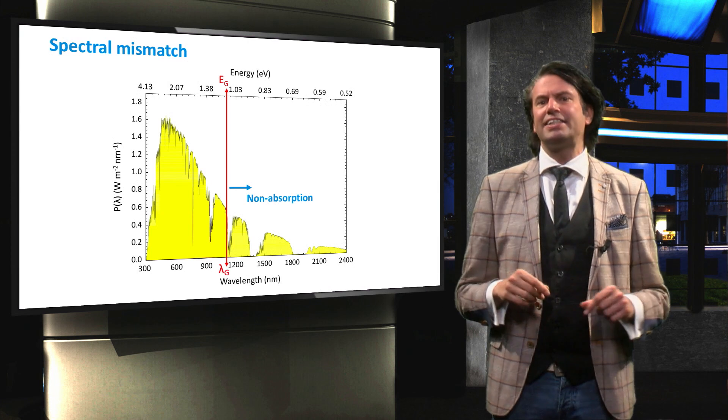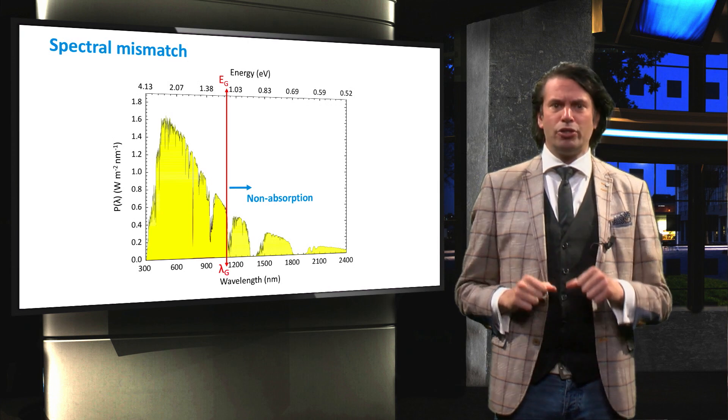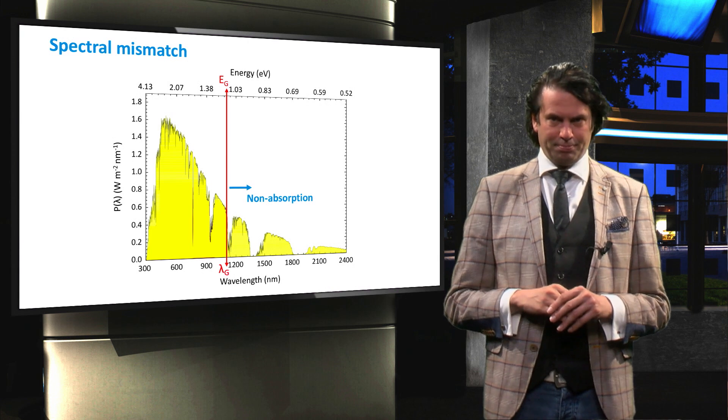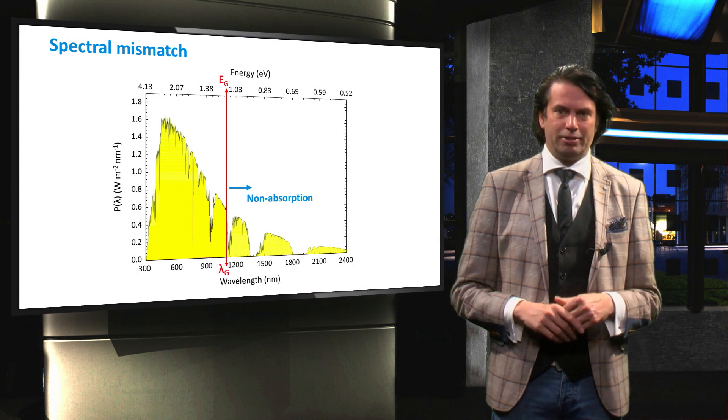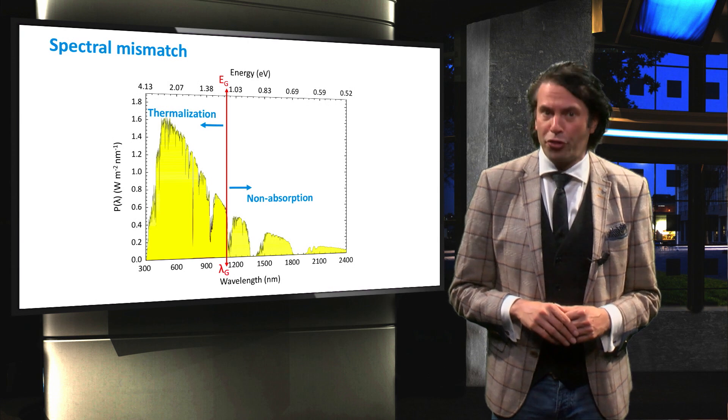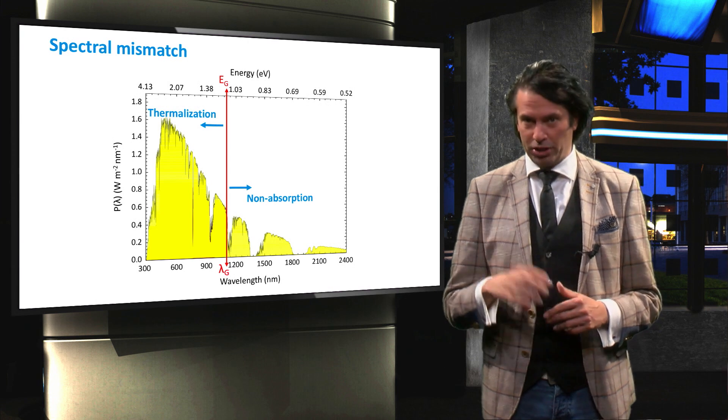Shortly after excitation, however, the electron will relax back to the conduction band edge. The excess energy is thereby converted into thermal energy. This process is called thermal relaxation or thermalization.